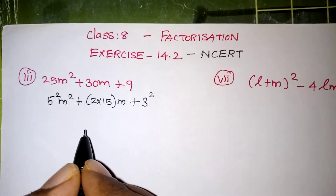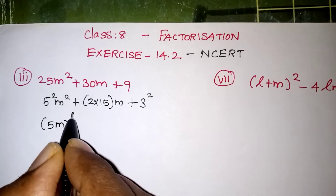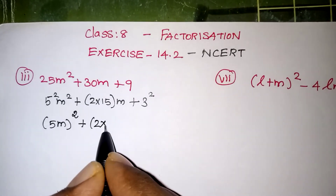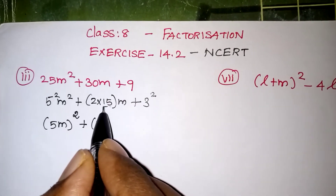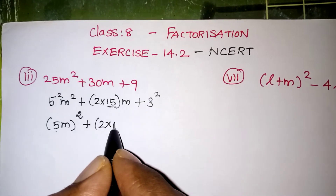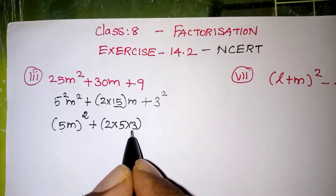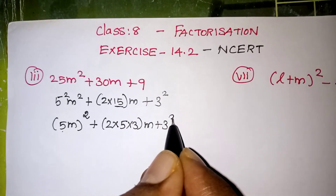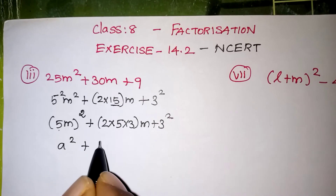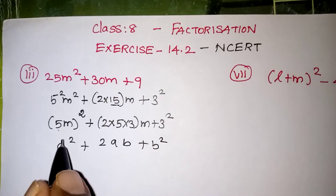Now 5 squared and m squared can be written as 5m the whole squared, plus — keep the 2 as it is — and 15 is nothing but 5 into 3, so we write 5 into 3. So now we have 5m the whole squared plus 2 into 5m into 3 plus 3 squared. This is looking like a squared plus 2ab plus b squared.